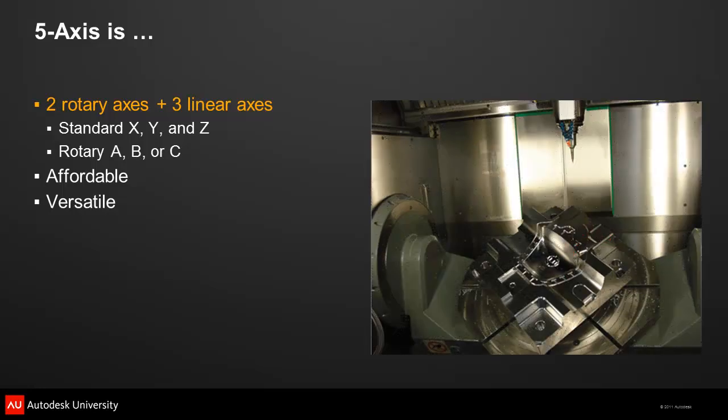In this photo, the machine is equipped with a rotary table mounted on a trunnion table. The trunnion uses A axis movement to tilt the part around the X axis, and the rotary table rotates around Z for C axis motion. By tilting and turning the part, you can cut from virtually any direction.